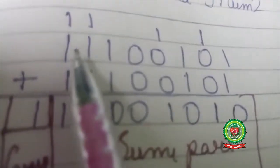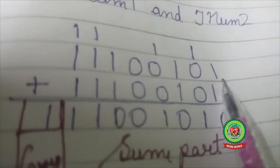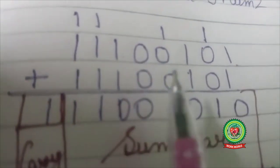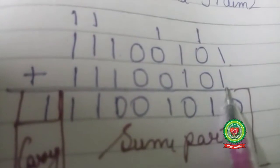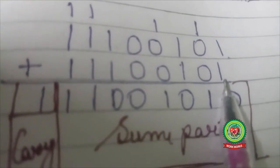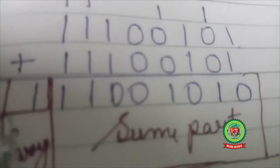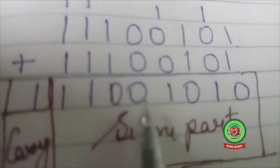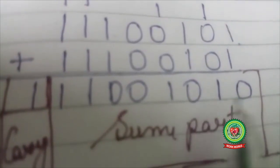So here I am adding 1 1 1 0 0 1 0 1 0, that is the first number, and 1 1 1 1 0 0 1 0 1, that is the two's complement of my second number. The answer is 1 1 1 0 0 1 0 1 0 1 0.